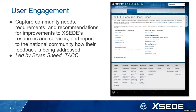User engagement is in charge of capturing community needs and requirements, gathering recommendations whether formally or informally expressed, and making sure those get filtered out to the right areas in the project and closing the loop. It's important to make sure this gets communicated back to the user community so they know, for example, if a piece of software or a tool they requested was useful to a broad part of our user community — that would go to the proper area XSEDE-wide and then be communicated back. That's actually led by Brian Sneed here at TACC.